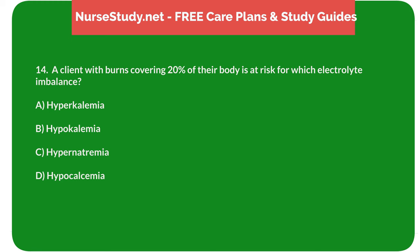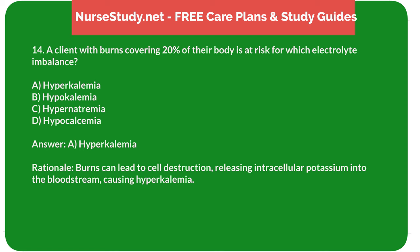Question 14: A client with burns covering 20% of their body is at risk for which electrolyte imbalance? A. Hyperkalemia. B. Hypokalemia. C. Hypernatremia. D. Hypocalcemia. Answer: A. Hyperkalemia. Rationale: Burns can lead to cell destruction, releasing intracellular potassium into the bloodstream, causing hyperkalemia.